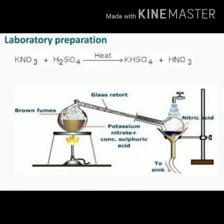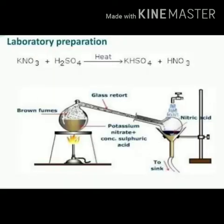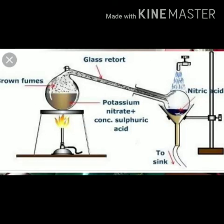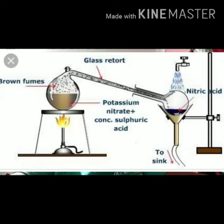Above 200°C, the reactions are: 2NaNO3 + H2SO4 → Na2SO4 + 2HNO3, and 2KNO3 + H2SO4 → K2SO4 + 2HNO3. So above 200°C, sodium sulfate or potassium sulfate is formed along with nitric acid.